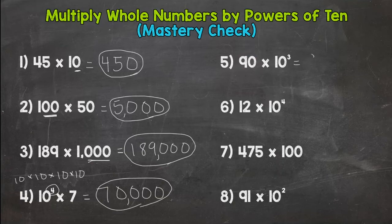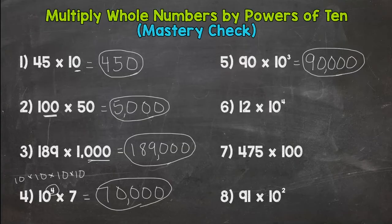So number five, we have 90 and we multiply it by 10 to the third, which is 10 times 10 times 10, which is 1,000. So we need an additional three zeros, and we get a product of 90,000. Remember, product means answer to a multiplication problem.